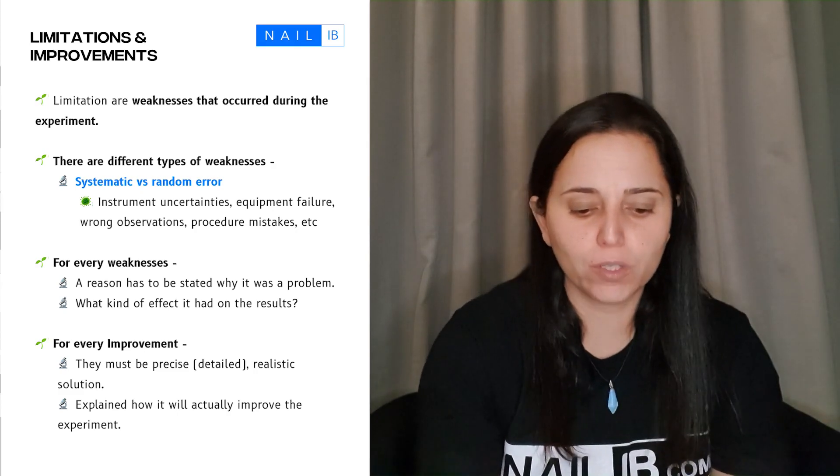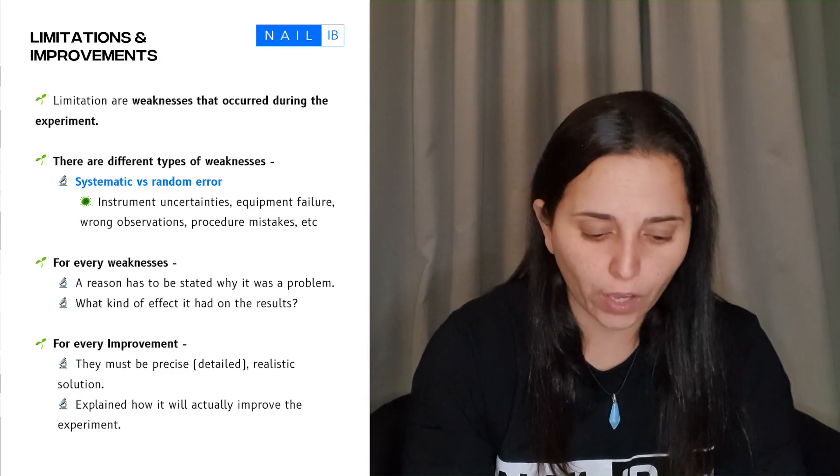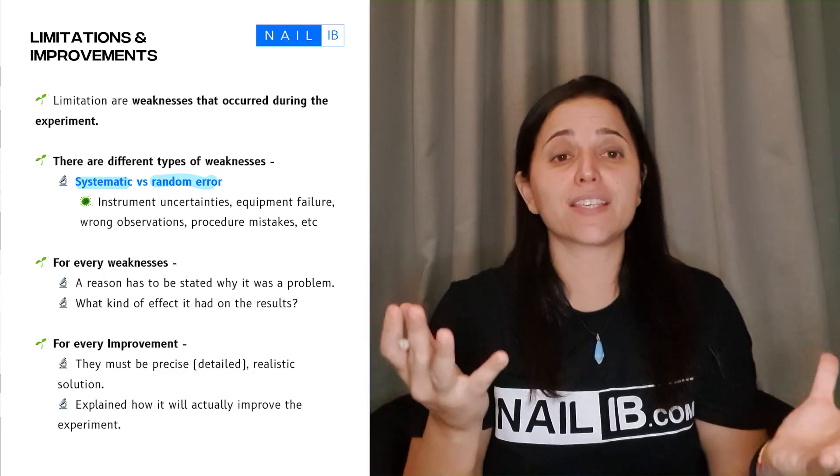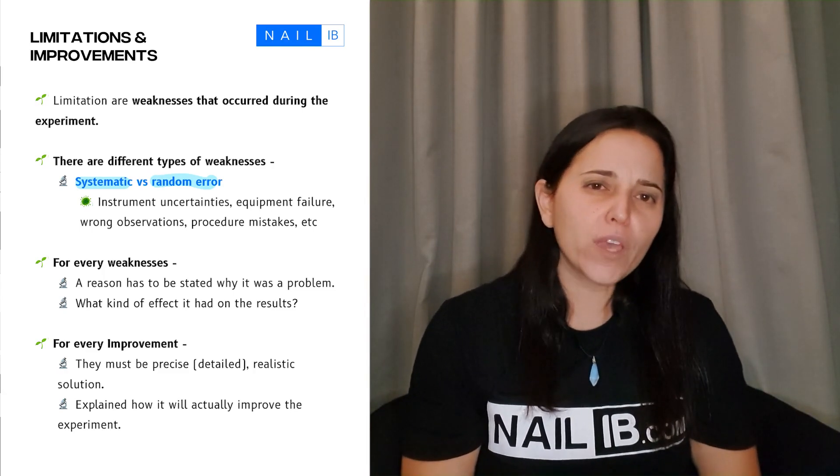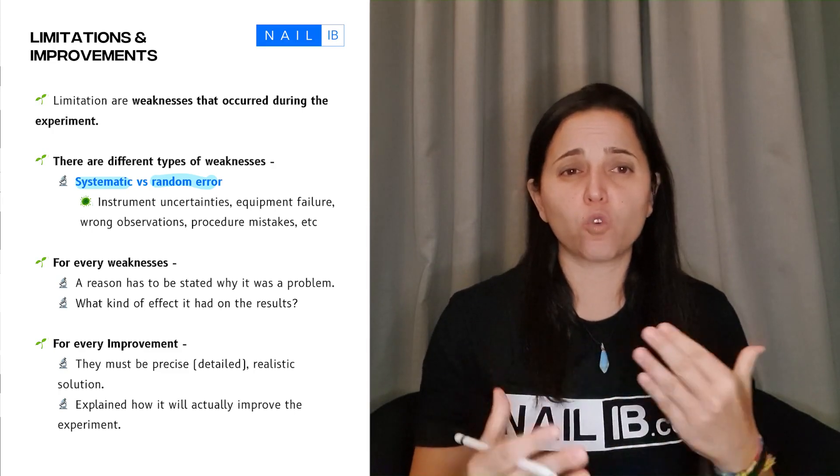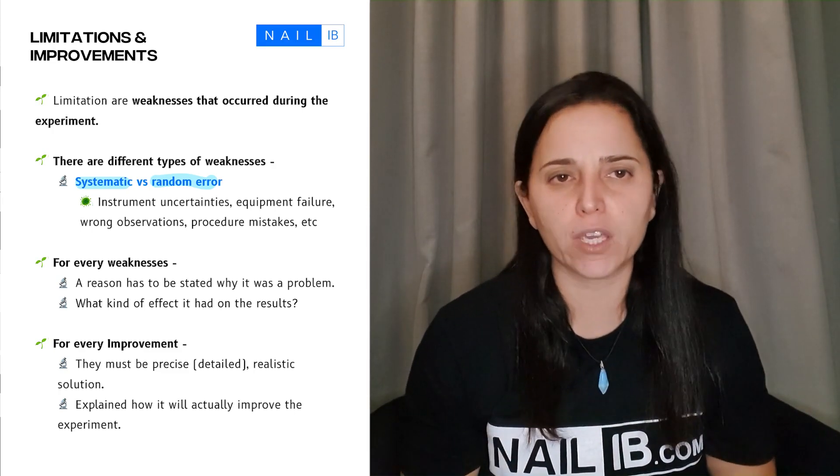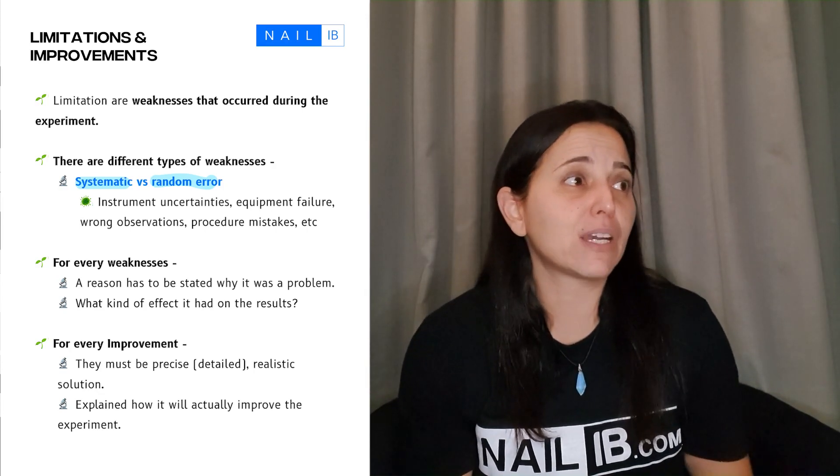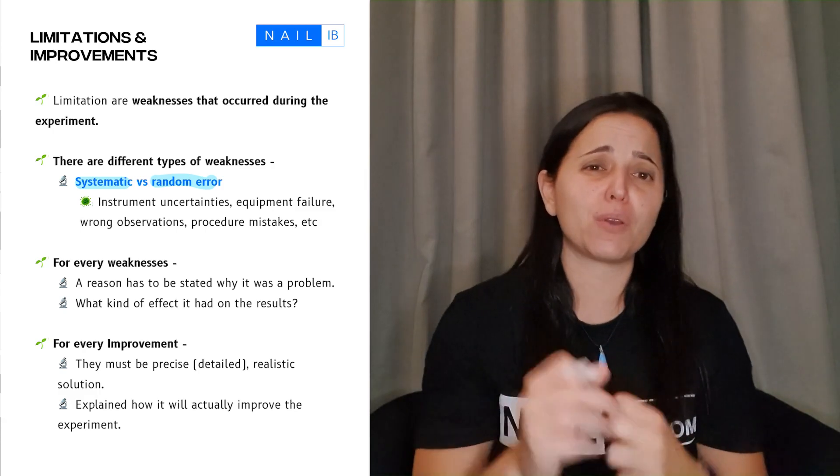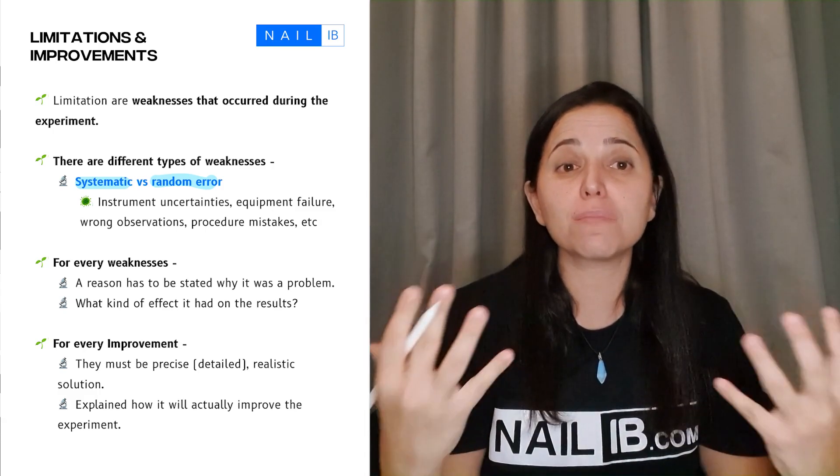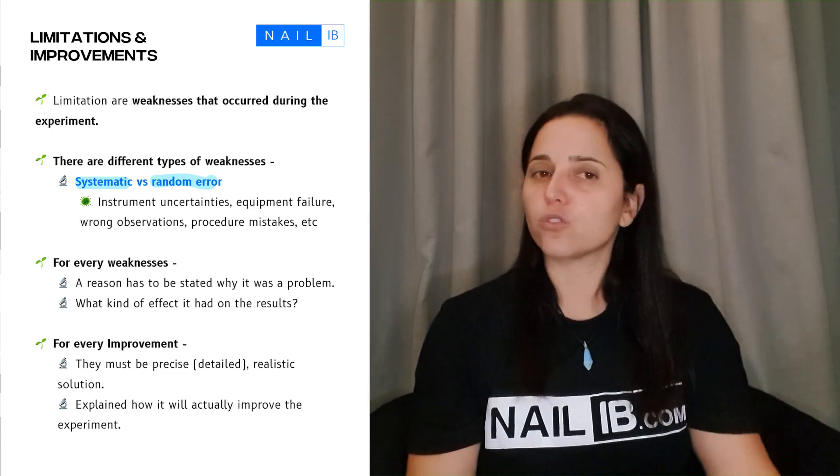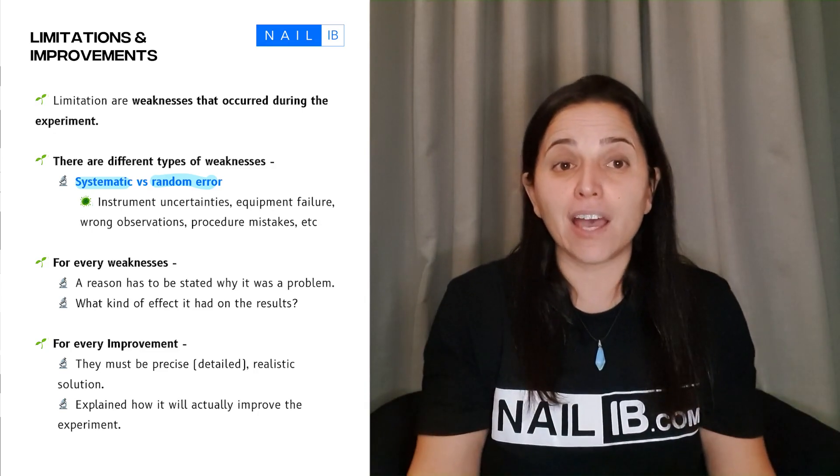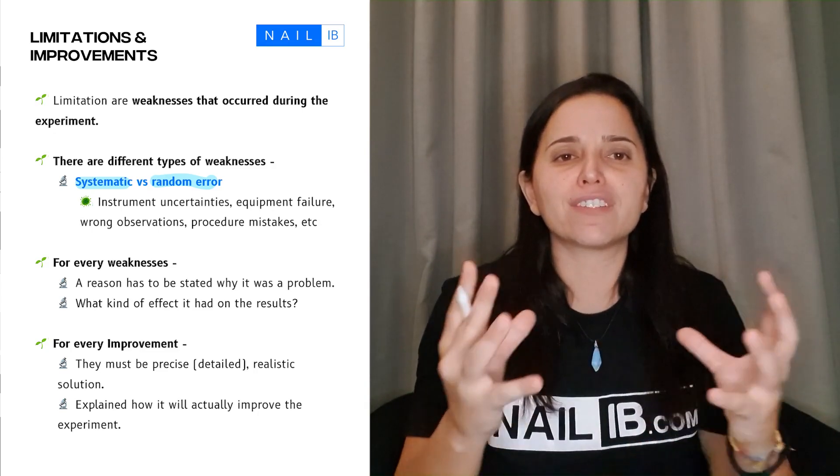When it comes to limitations and improvements, there are two types: systematic and random errors. These are two types of weaknesses that might happen in your lab. When we talk about weaknesses, we're talking about your instruments, what's wrong with your instruments, maybe the uncertainty or calibration wasn't working well, or equipment has been worn out. But it can also be weaknesses where you made mistakes in observing things or controlling things or writing down measurements.